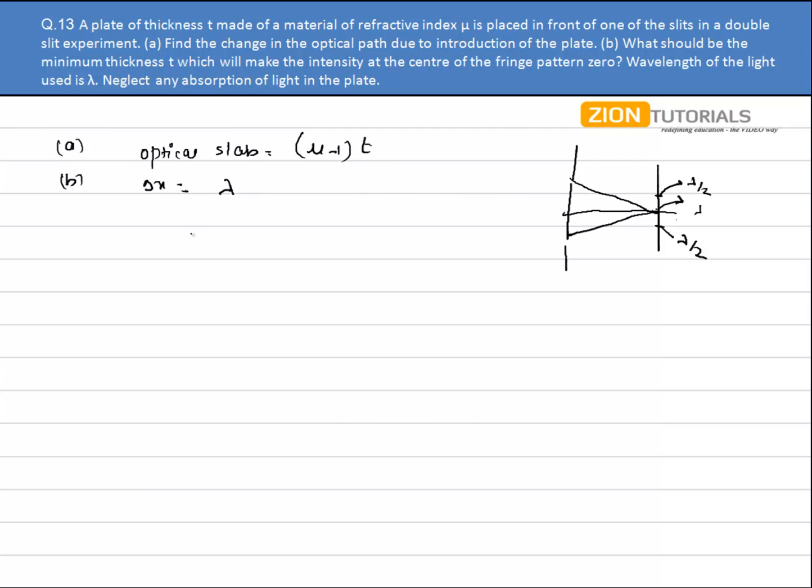Now the one thing is that of course if I insert a slab like this, fine, which will increase the path difference or that will decrease the path difference by lambda by 2, because lambda is already over here. If I decrease it by lambda by 2, then there will be a dark fringe at the center.